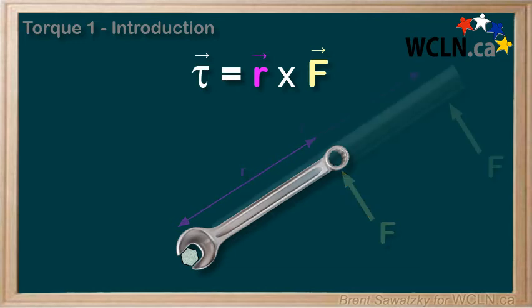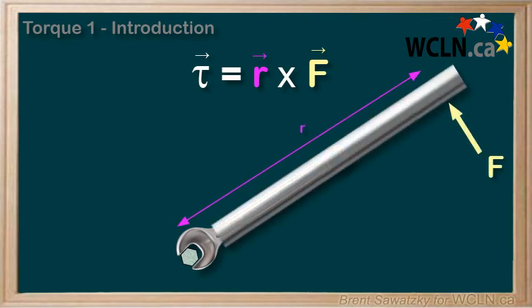Or, extend the wrench with a pipe. Now, the force is still the same, but the distance is twice as large in this case. And we get twice the torque.